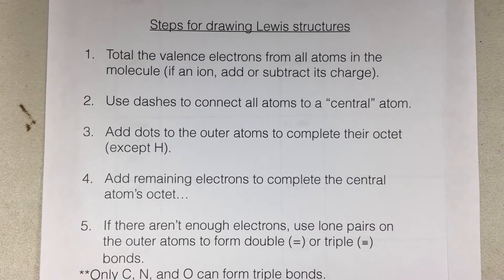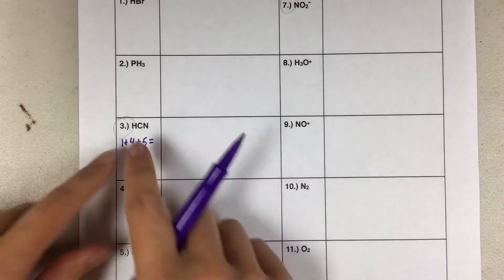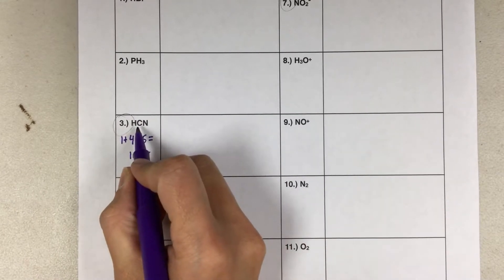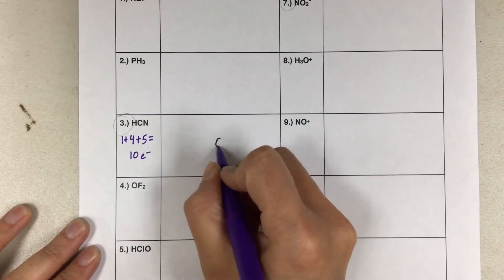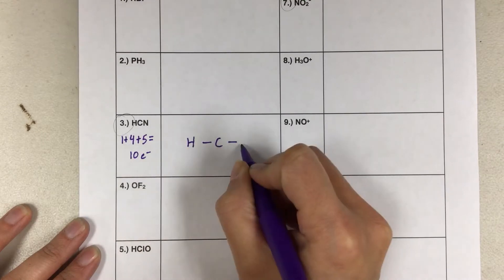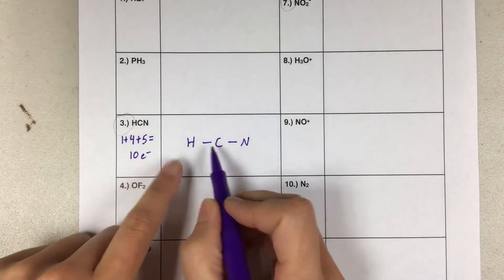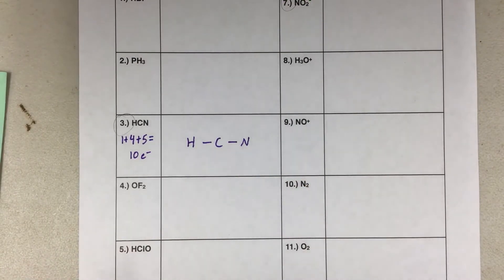Number two, use dashes to connect all atoms to a central atom. This is a little bit tricky if you're not sure what needs to be in the center. The way it's written will give you hints as to what's in the center. Since this is written HCN, I know that carbon's in the center because it's in the center of the formula. And a good rule of thumb is that carbon likes to be the center of attention. So I'm going to put carbon in the center and then connect hydrogen and nitrogen to the central atom.